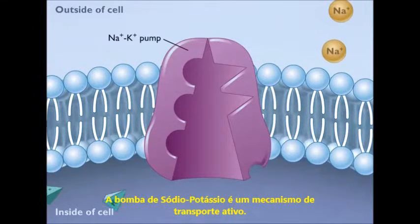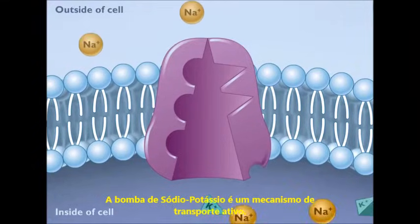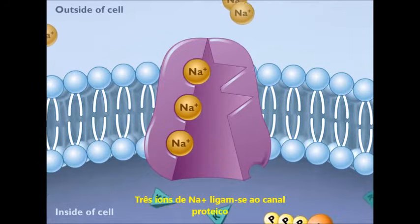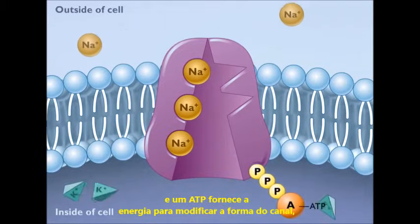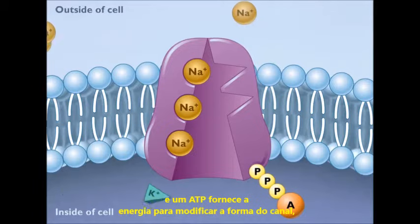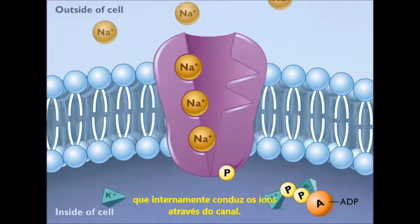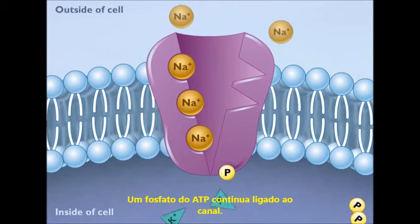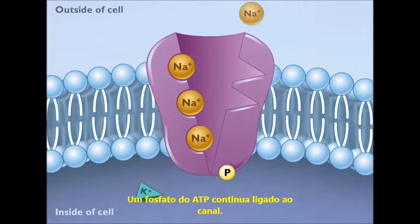The sodium-potassium pump is an active transport mechanism. Three sodium ions bind to the protein channel, and an ATP provides the energy to change the shape of the channel that in turn drives the ions through the channel. One phosphate group from the ATP remains bound with the channel.